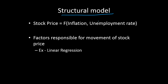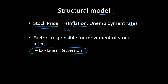Structural models are nothing but regression models. For example, stock price can also be modeled as a function of inflation and unemployment rate, which are macroeconomic variables. These factors are responsible for different fluctuations in the stock price or stock index. This function could be a linear regression function, a logistic regression function, or a multinomial logistic regression function — in this case, linear regression since stock price is a continuous variable.